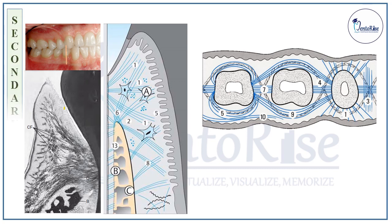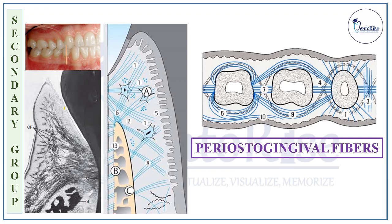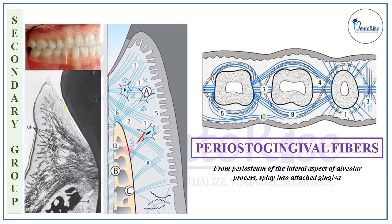Moving to the secondary group of gingival fibers, the first category are the Periosteo-gingival fibers. From the name, these fibers start from the periosteum of the alveolar process — more specifically from the periosteum of the lateral aspect of the alveolar process — and splay into the gingival part, particularly into the attached gingiva. Thus, these fibers attach the gingiva to the bone.